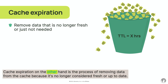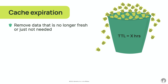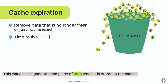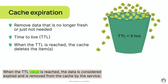Cache expiration, on the other hand, is the process of removing data from the cache because it's no longer considered fresh or up to date. This is typically determined by a value called the cache time to live, or TTL. This value is assigned to each piece of data when it is stored in the cache. When the TTL value is reached, the data is considered expired and is removed from the cache by the service.